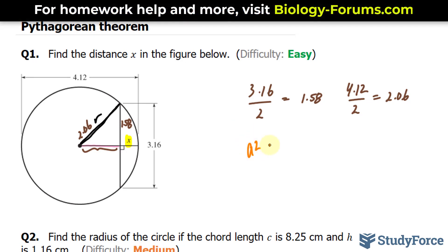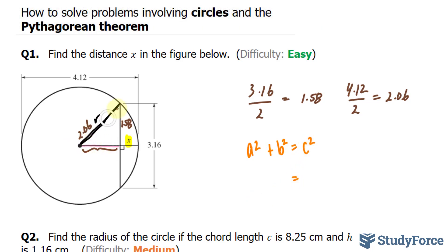We have a squared plus b squared is equal to c squared. Our hypotenuse is r, which I'll replace with 2.06 squared. This side can be called a, and this side we already know it's 1.58, plus 1.58 squared.